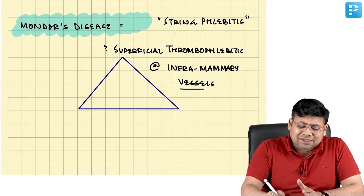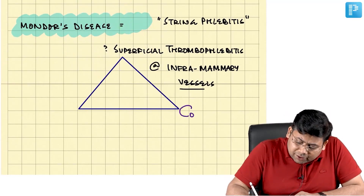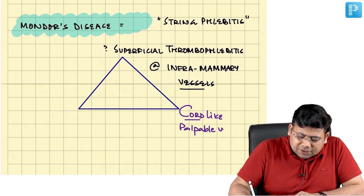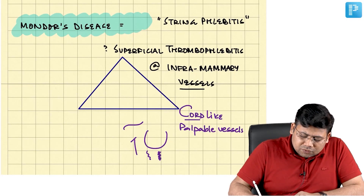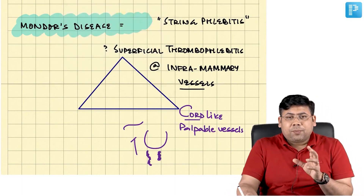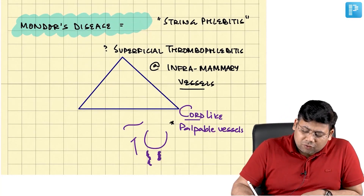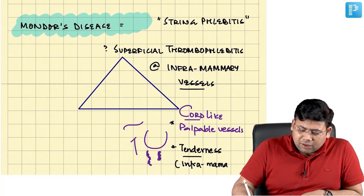Because of this, the patient has a classical presentation — chord-like palpable vessels. They appear like a string, which is why this is called String Phlebitis. There is also tenderness in the inframammary region.